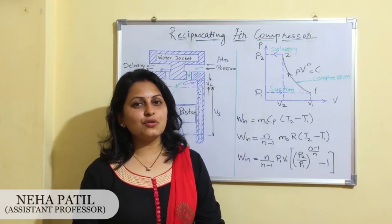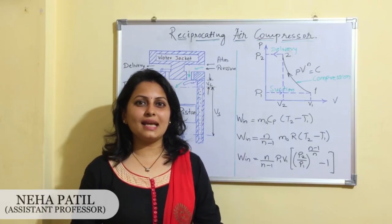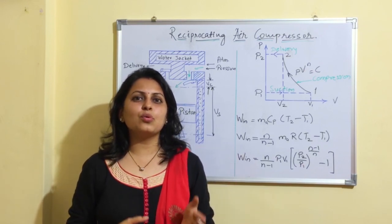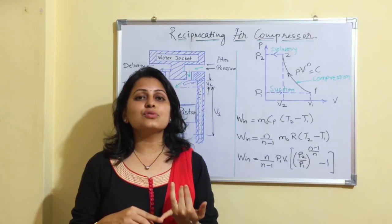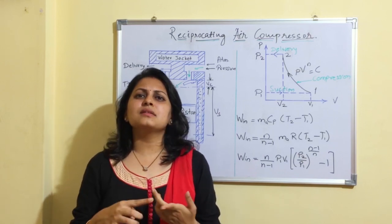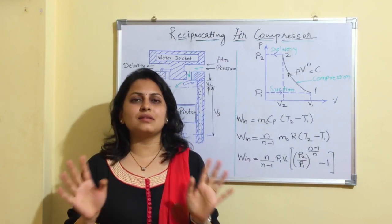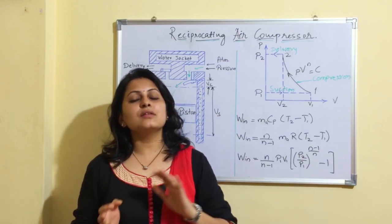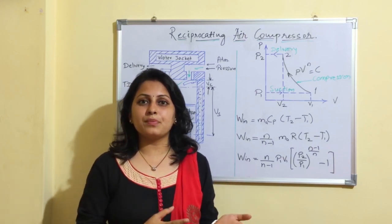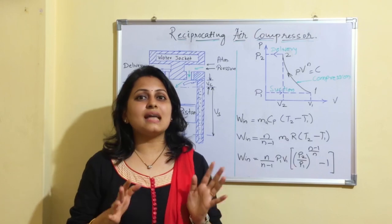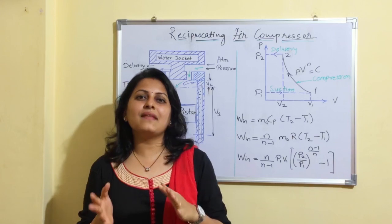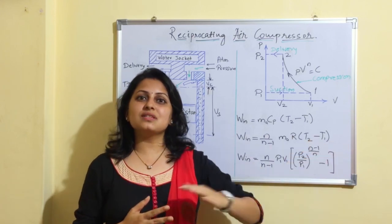In this video we are going to study reciprocating air compressor. First, let us understand why air is used in industry — it is used in refrigeration, air conditioning, various cleaning purposes, blast furnace and power plants, and many other applications. This compressed air is produced from a reciprocating air compressor. An air compressor is a machine which takes in atmospheric air, compresses it with mechanical energy, and then delivers air at higher pressure.